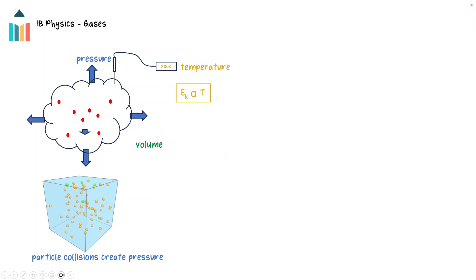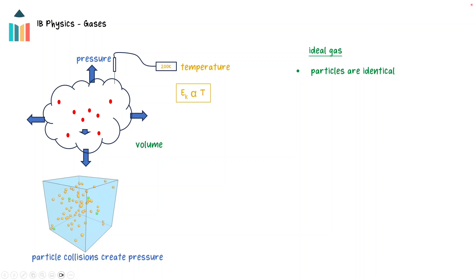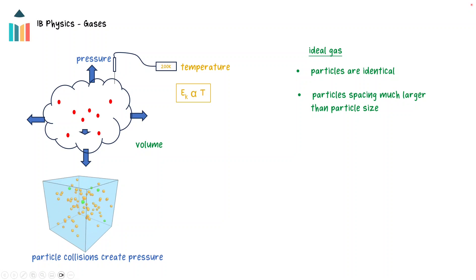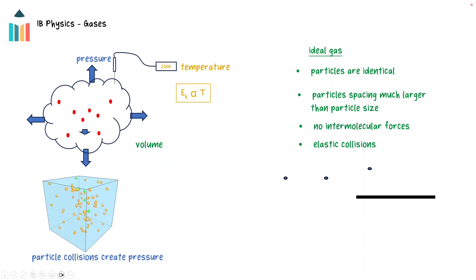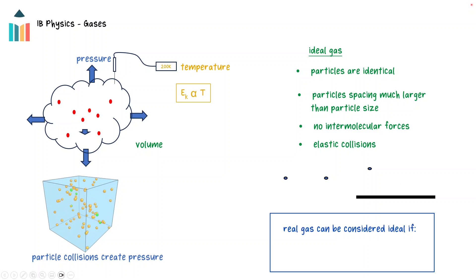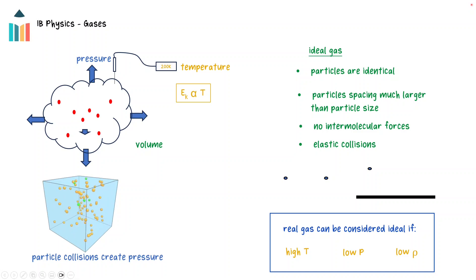In order to make predictions about gas behavior, gases are often assumed to be ideal. The assumptions made for ideal gases include that the particles are identical and the distance between the particles is much larger than the size of the particle. In an ideal gas, the intermolecular forces are considered not to exist and all particle collisions are elastic. The equations presented for gases in this topic apply to ideal gases only. The conditions under which gases will approximate ideal gas behavior are when there's a high temperature, a low gas pressure, and a low gas density.